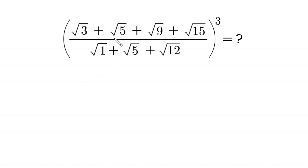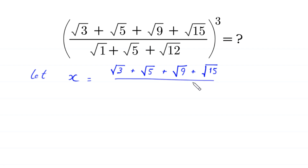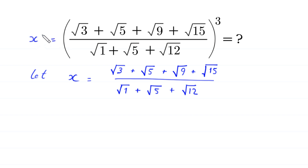We suppose that the expression inside the parentheses is equal to x. Let x equal (√3 + √5 + √9 + √15) divided by (√1 + √5 + √12). This means that the original expression equals x cubed, so our job is to find the value of x cubed.